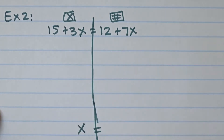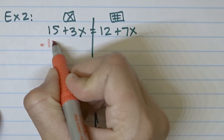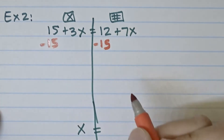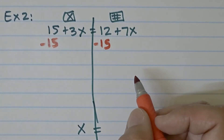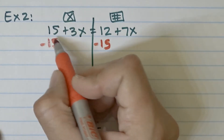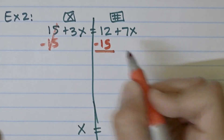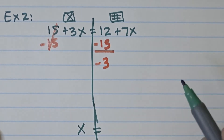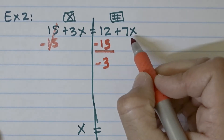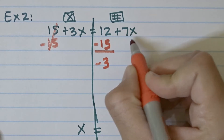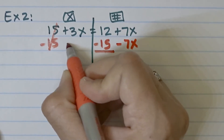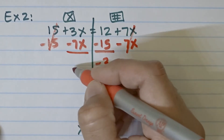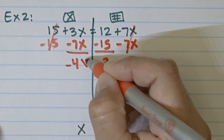Two things need to move: the 15 and the 7x. First, get rid of the positive 15 by subtracting 15 from both sides — what you do to one side you must do to the other to keep the equation balanced. That zeros out, leaving negative 3 on the right. Then subtract 7x from both sides to eliminate the 7x, leaving negative 4x on the left.